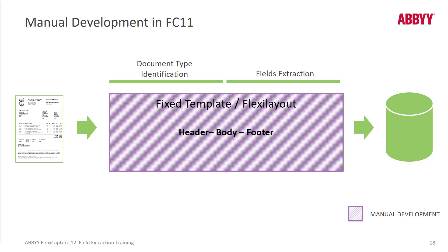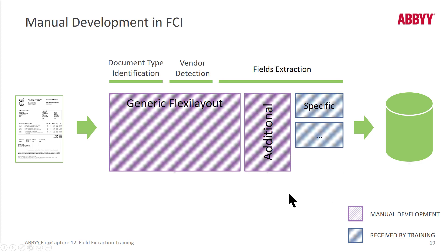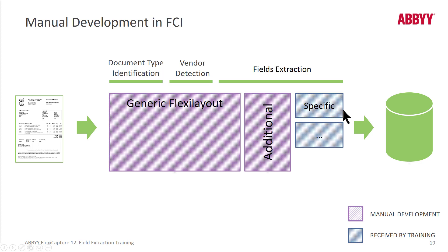Using a manual approach was the way we had to proceed in FlexiCapture 11 initially. We would manually create elements in the header group, footer group, and body to extract data. Then in version 11, we introduced FlexiCapture for Invoices, which shipped with a generic FlexiLayout created by our developers — not by machine learning. You could add an additional overarching layout to grab data from all vendors, such as for a customer ID field that FlexiCapture for Invoices doesn't support, and adjunctive layouts could be spun up automatically for a given vendor where data was found in the wrong location.